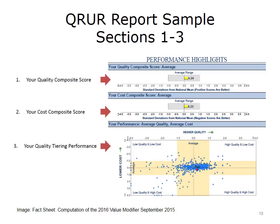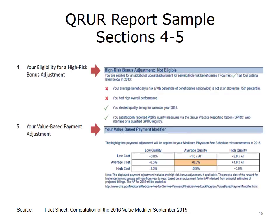Providers in the high quality and low cost quadrant are the ones who would receive incentives. It's also the way that EPs can demonstrate that they are providing high value. The final elements of the QRUR report tell the EP whether they receive a penalty or an incentive payment. These currently range from a 1% penalty to an incentive of twice the adjusted fee schedule, but will become part of MIPS.